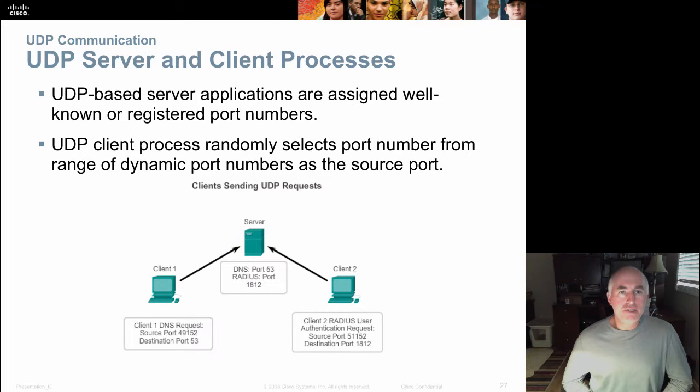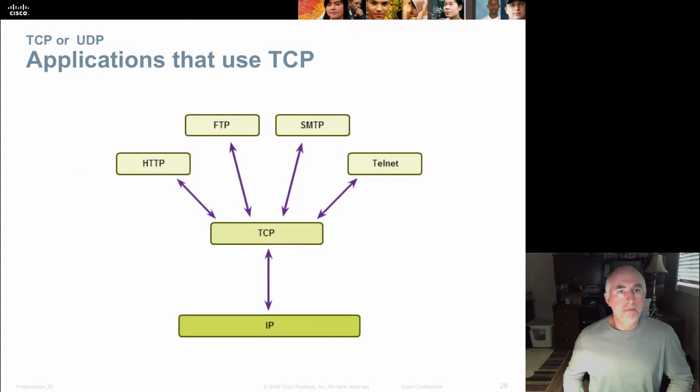UDP uses port numbers, registered port numbers. So there are registered port numbers for the applications that use UDP. Also UDP uses unregistered port numbers, those randomly selected port numbers for the client. And you can see the same examples here. The client's going to choose a made-up port number and send it to a destination port. Here are some applications that choose TCP as their default. The web, file transfers, the ping protocol, SMTP, and the telnet protocol.